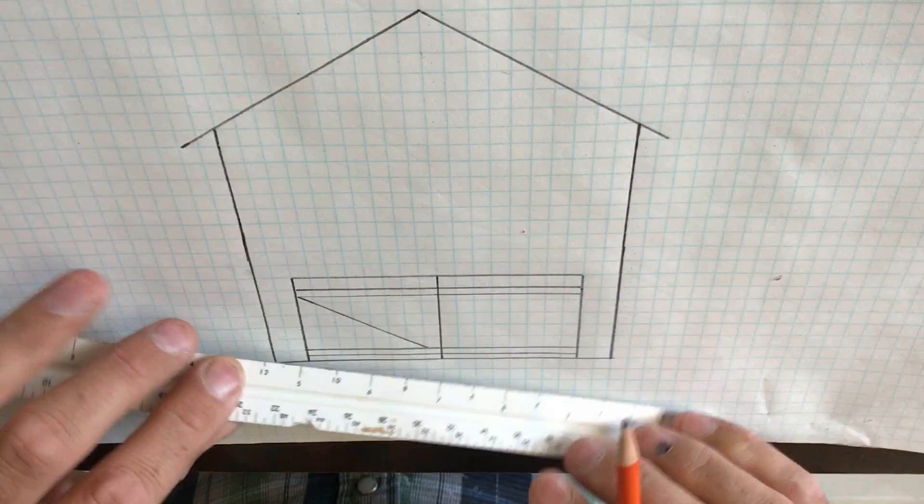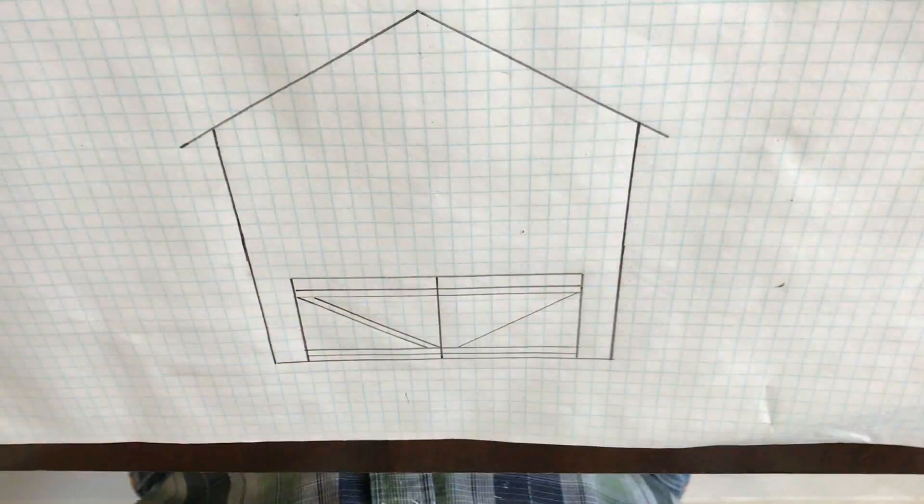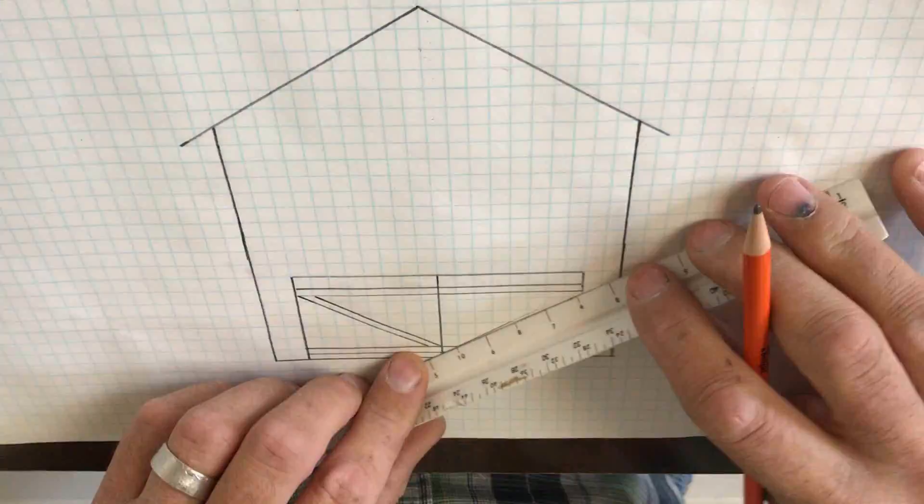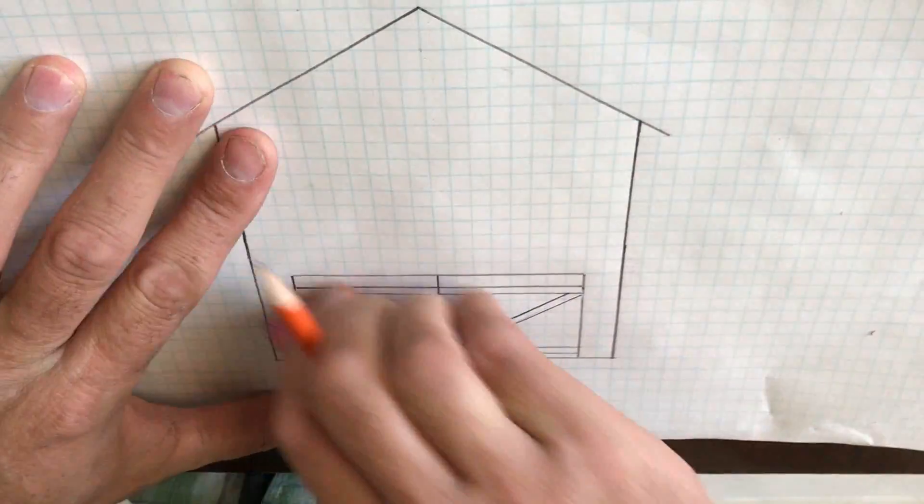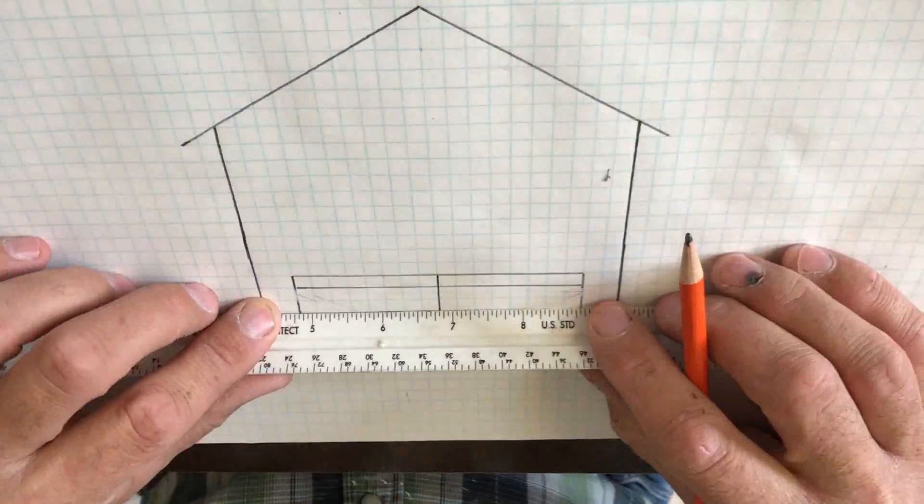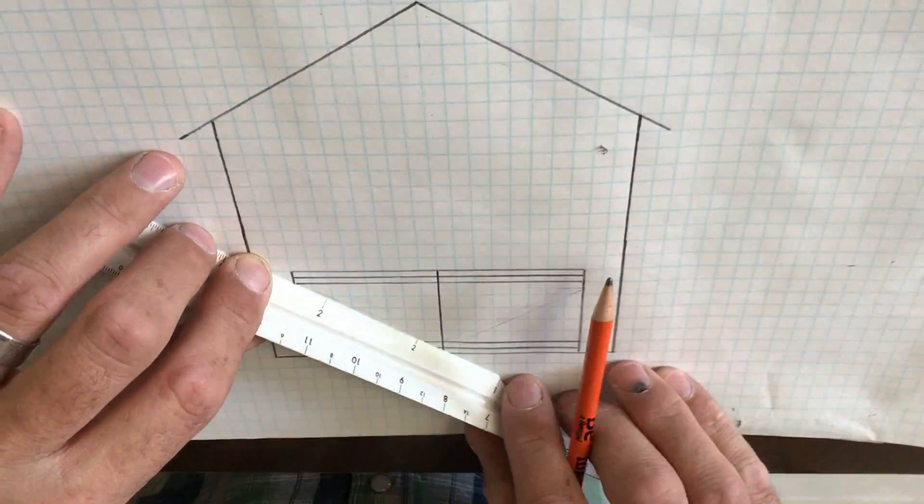This drawing will help me figure out exactly what I need out of the 2x12s that we just picked up and what I can give to Terrell. It will also help me figure out exactly how many sheets of OSB I do not have, along with the remaining 2x6s that I need to pick up.